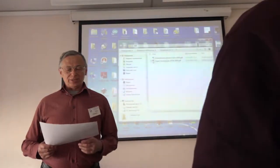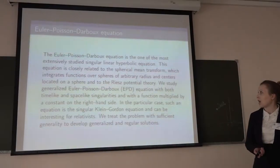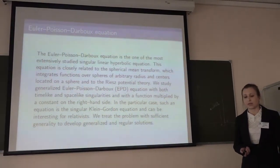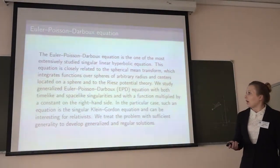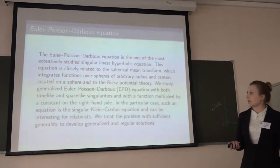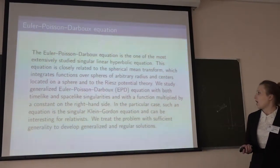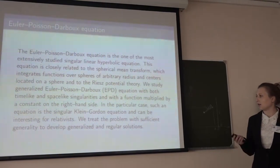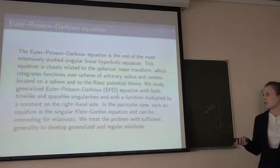The next speaker, Elina Shishkina. The title is 'Solution of the Cauchy Problem, Generalized.' This is a hyperbolic equation, and this equation is closely connected to a weighted spherical mean and to the Riesz potential — more precisely with a hyperbolic B-potential of Riesz. In particular, this equation is the singular Klein-Gordon equation, and it could be interesting for relativists.